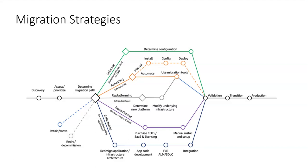Usually for any cloud migration, there are six strategies any architect, developer, or cloud engineer follows: Retain, Retire, Relocate, Rehosting, Repurchasing, and Refactoring. You can ignore Relocate for the time being. So Retain, Retire, Rehosting, Re-platforming, Repurchasing, and Refactoring are the six strategies you always need to remember.